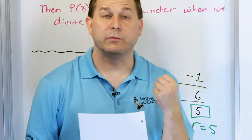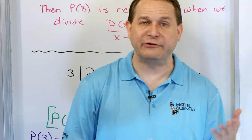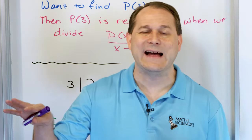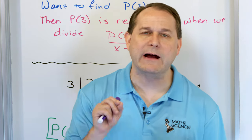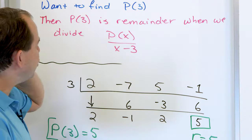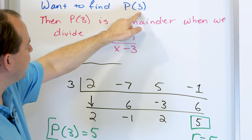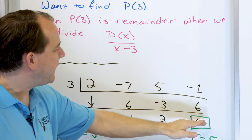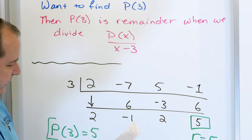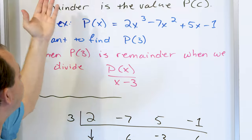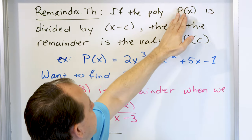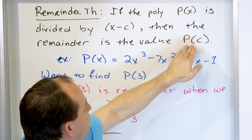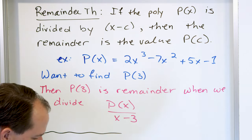For right now, I only want you to know: when you want to find the value of a polynomial at a number, just divide by x minus that number, and the remainder you get is going to be the value that you seek. That's really all I'm trying to say, and that's what the formal theorem statement is saying: if the polynomial p of x is divided by x minus c, then the remainder is the value of p evaluated at c.